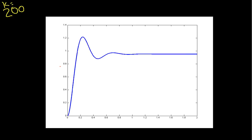And you can see that the desired value is 1, and we get to 0.95. So the steady state error is down to 0.05, which is what we computed it should be. This distance here is 0.05.